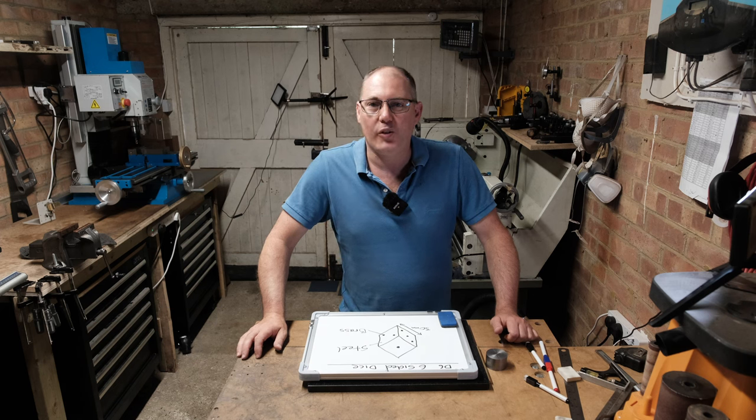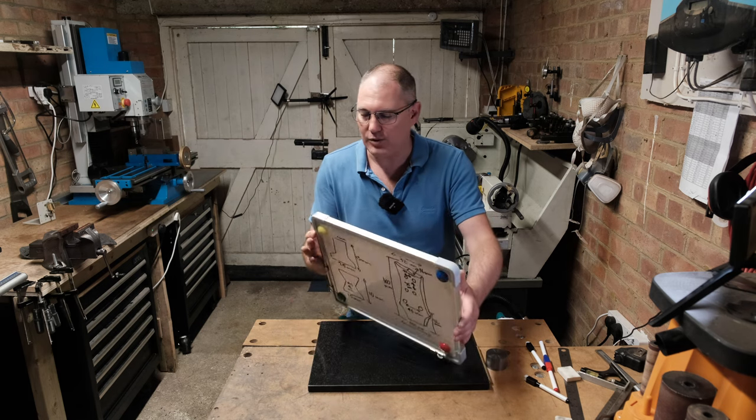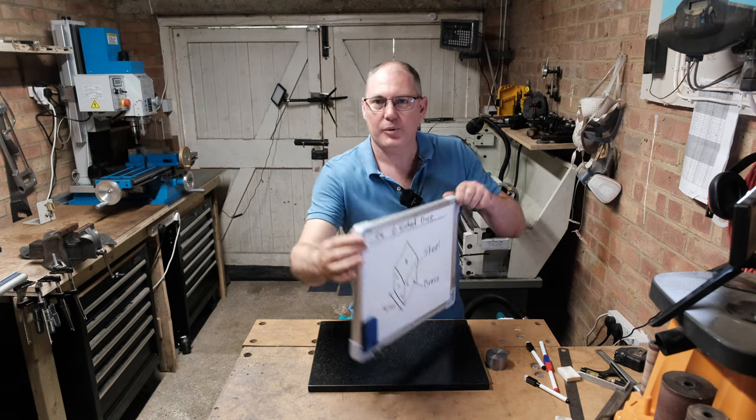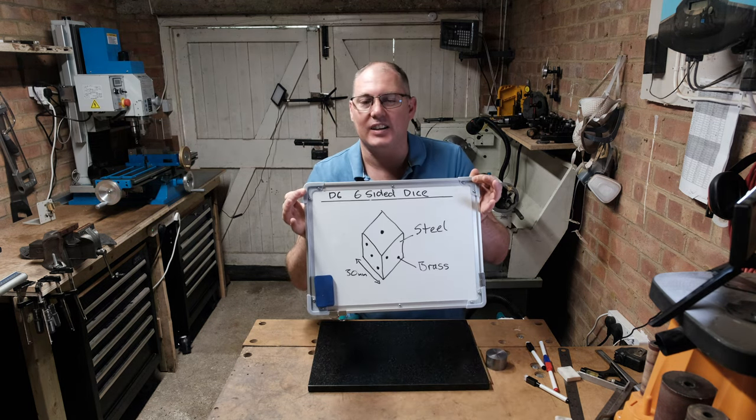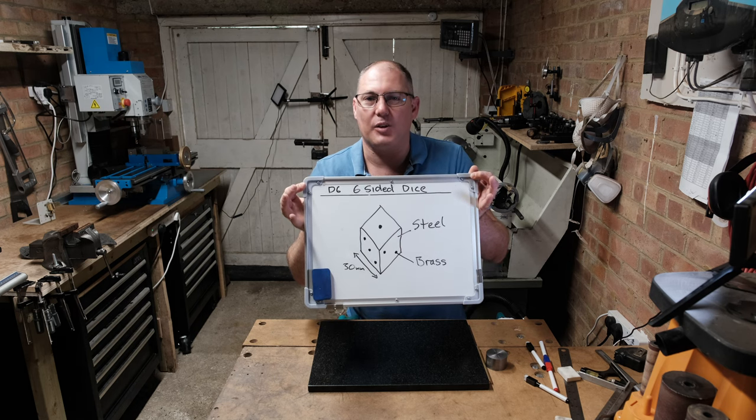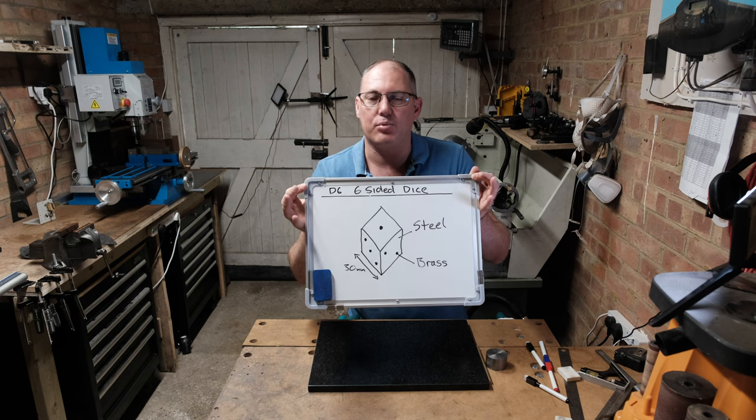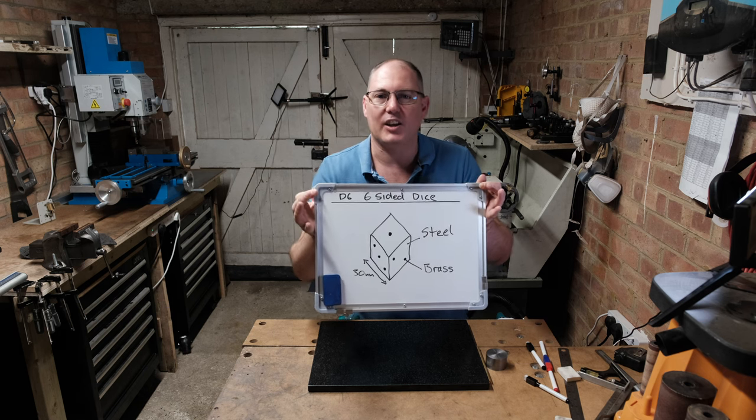Hi all, my name is Lee. Welcome to the channel. I've got a really interesting project for you today. I am going to make a six-sided tabletop dice. The main thing is it's going to be a luxury dice made of steel with brass dots in it. So let's take a closer look.